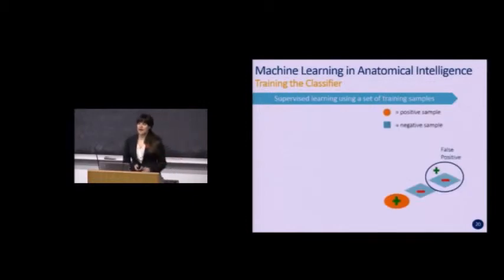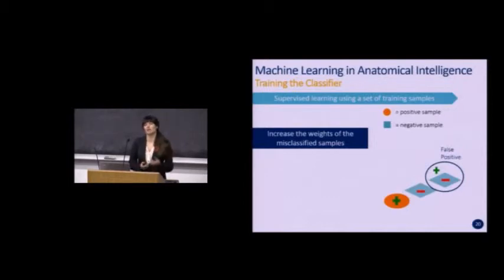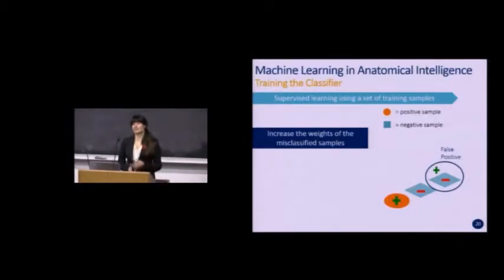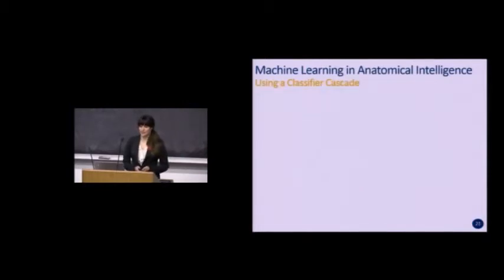To deal with a false positive, the weights of misclassified samples are increased. This is like playing a piece of music on a piano — if you accidentally hit the flat instead of the sharp, the next time you play that piece, you put extra focus on that single note to make sure you don't get it wrong again. The algorithm does the same, focusing more on heavily weighted samples. Running the images through the classifier again, it's now able to correctly categorize all three.